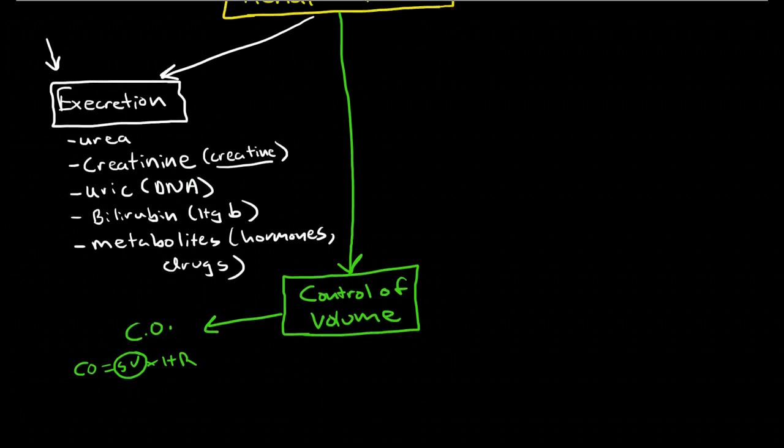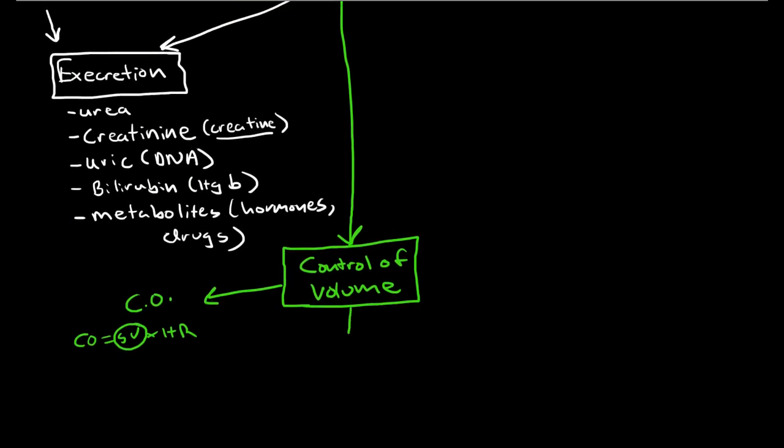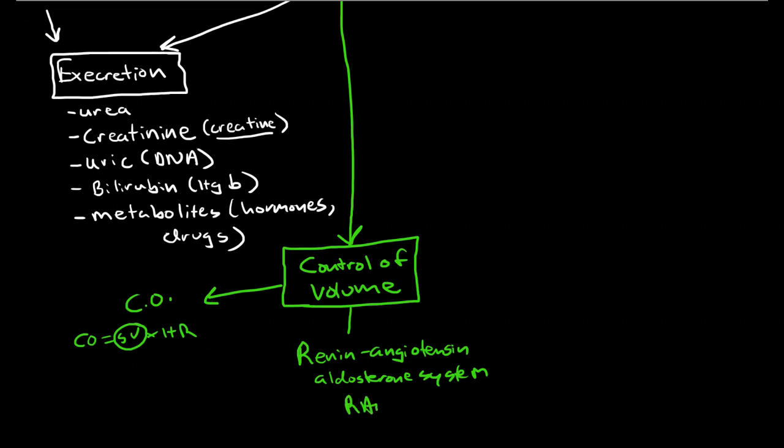Now how does it do this? Well it does this through the renin-angiotensin-aldosterone system, nicely abbreviated RAAS. The renin-angiotensin-aldosterone system we'll talk about in depth, but its major role is to increase blood volume and thereby increase blood pressure.